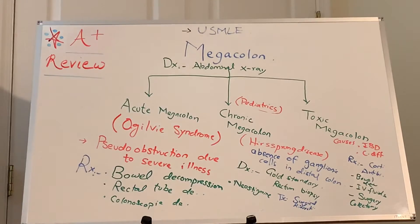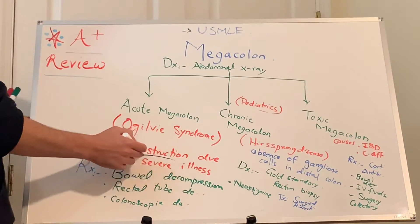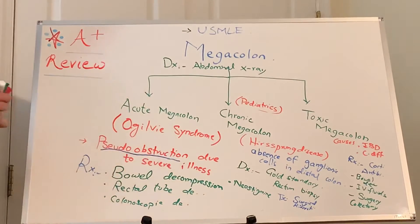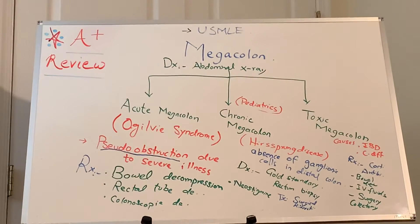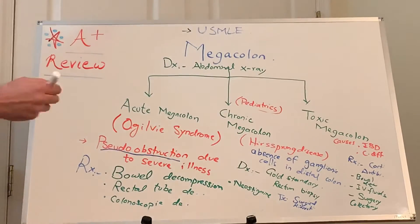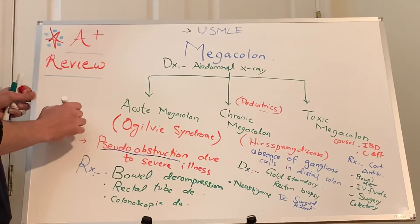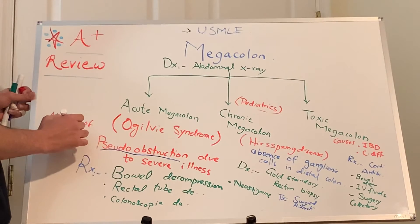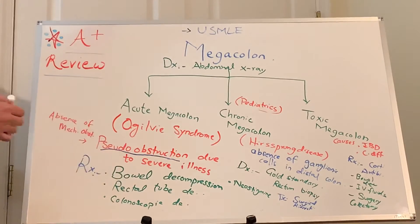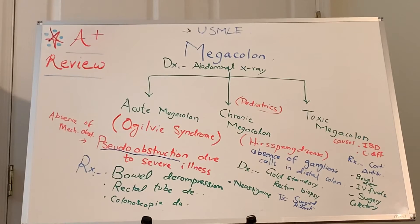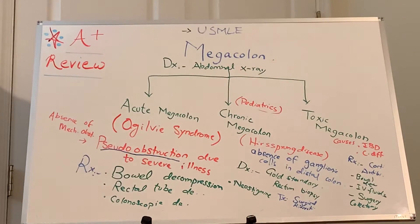Dr. Hana clarifies: pseudo-obstruction is defined as acute dilation of the large intestine in the absence of mechanical obstruction. Causes of Ogilvie syndrome include anticholinergics, neostigmine effects, recent surgery, sepsis, narcotics, and malignancy. The differential from toxic megacolon is that toxic megacolon involves severe colitis with systemic toxicity like tachycardia, fever, and altered mental status. A large bowel obstruction differs in that a mechanical obstruction would be present.